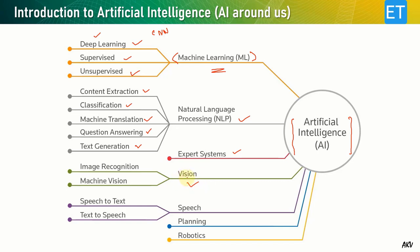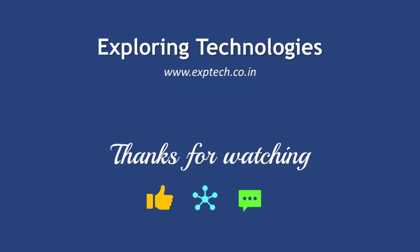Computer vision mimics the human vision system and has the capability of image recognition. Related branches include speech-to-text and text-to-speech, planning, and robotics. AI is very popular nowadays and attracts students and people to study it. Based on your interest and choice you can go through any of these branches to develop expertise. In coming videos, we will go through machine learning and show examples of using deep learning for object recognition.